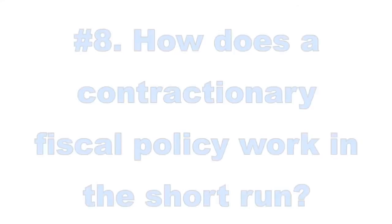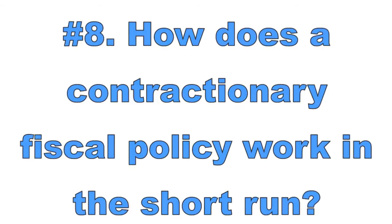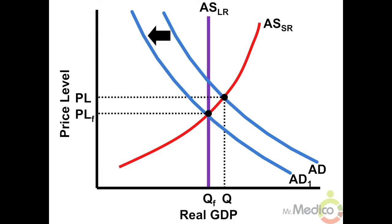Number eight: how does a contractionary fiscal policy work in the short run? According to Keynesian theory, contractionary fiscal policy is appropriate when the economy is experiencing inflation. The government can decrease spending and/or increase income taxes to shift aggregate demand to the left, decreasing real GDP, lowering the price level, and increasing the unemployment rate. Contractionary fiscal policies move the federal budget balance toward a surplus.